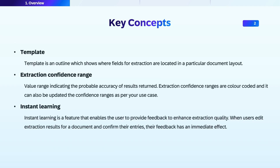Template is a schematic outline which shows where the fields are available in a particular document layout. Extraction confidence range is a value range which indicates the probable accuracy of results returned from the extractor. These ranges are color-coded to give a visual cue to developers or evaluators whether the extraction quality is within acceptable thresholds or not.